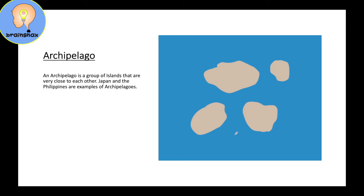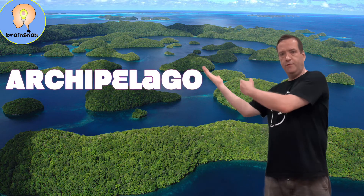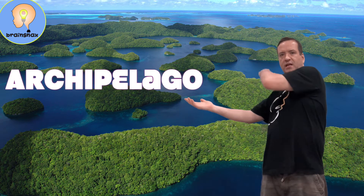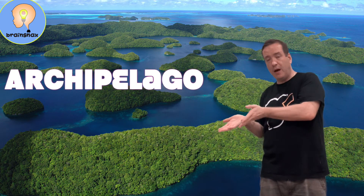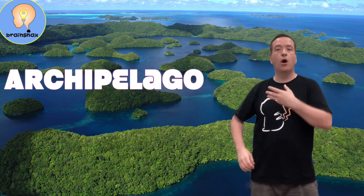And this is called an archipelago. An archipelago is a group of islands that are very close to each other. Japan and the Philippines are examples of archipelagos. This behind me is an archipelago — if you take a look, there are many, many little islands all over the place here, all separated by water on all four sides. This is an archipelago.